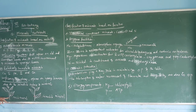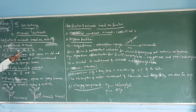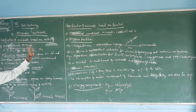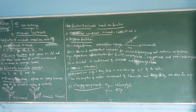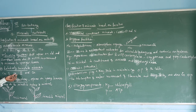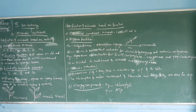To summarize: mobile minerals are nitrogen, phosphorus, potassium, magnesium, chlorine, sulfur, zinc, and molybdenum. Relatively immobile minerals include calcium, sulfur, iron, boron, and copper.